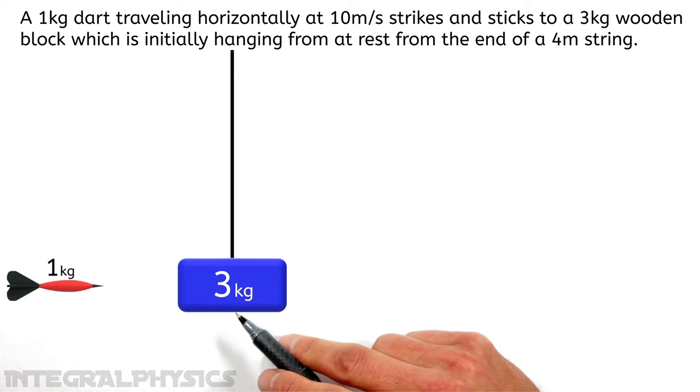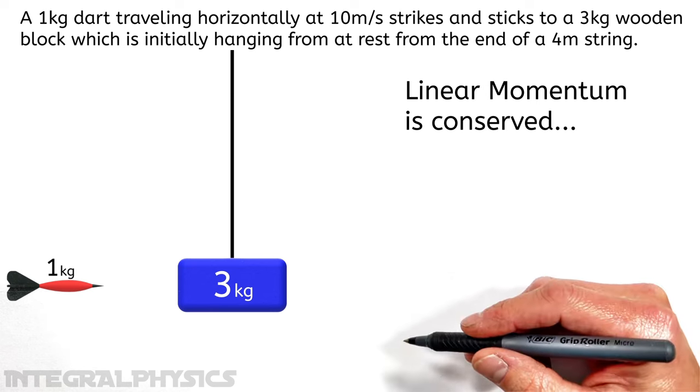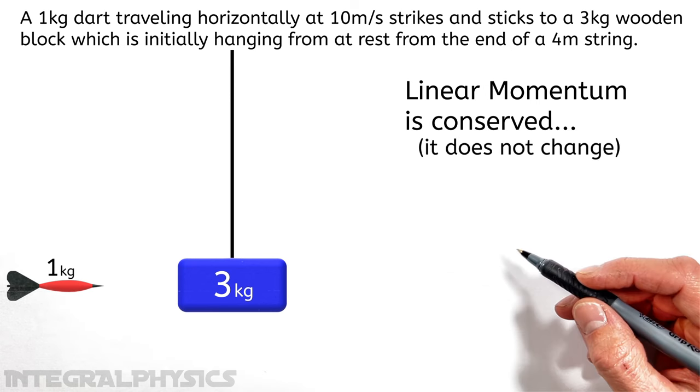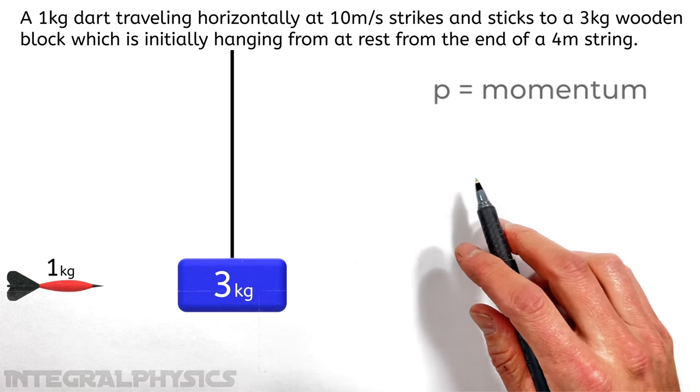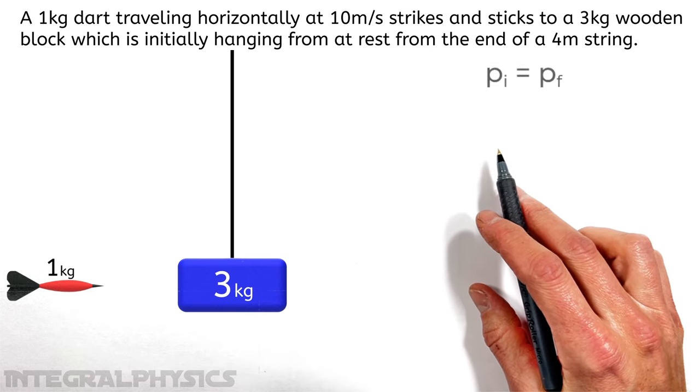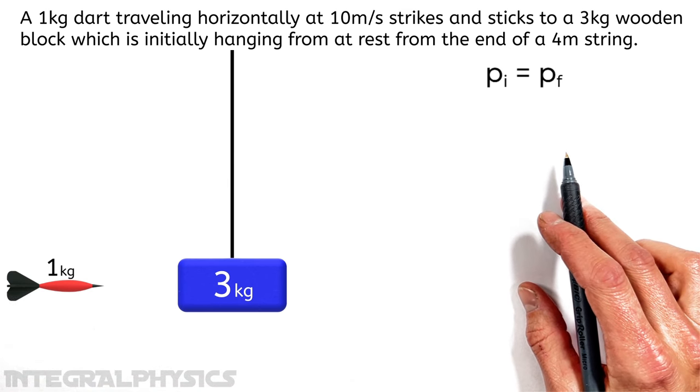Now when two objects collide like this dart and block, linear momentum is conserved. That is to say, it doesn't change. Now in physics, we use the letter P for momentum. So I'm going to set the initial momentum, let's call that PI, equal to the final momentum, PF.